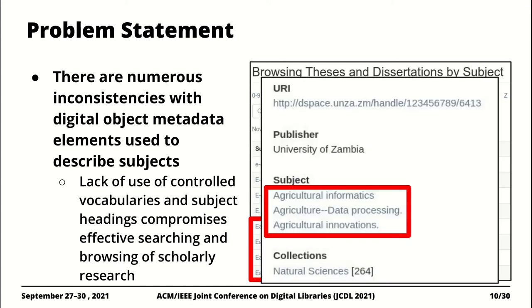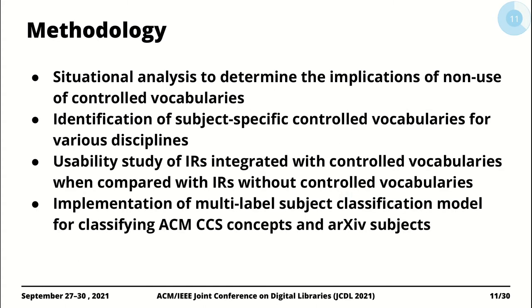We also see a sheer lack of use of subject-specific or discipline-specific subject headings. A case in point: for computer science research, the de facto standard used to tag computer science research is the ACM CCS concepts. But what we see at the University of Zambia is that computer science-centric content is actually tagged with generic subject headings — more specifically, the Library of Congress subject headings are used to specify subjects in the University of Zambia institutional repository.